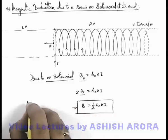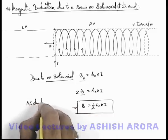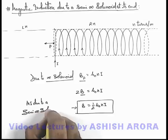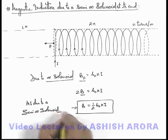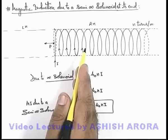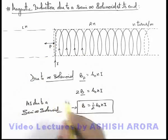This is the magnetic induction due to a semi-infinite solenoid, or it can be considered as a half-infinite solenoid, whether it is on the right side or left side, at one of its cross-sectional ends.